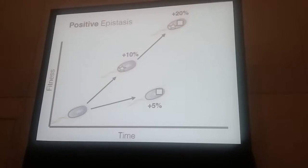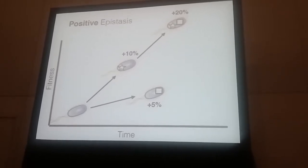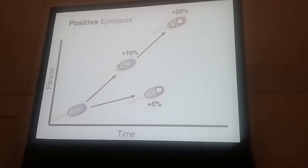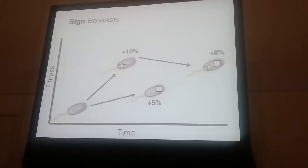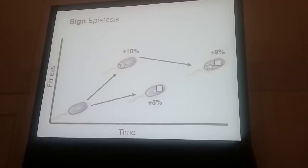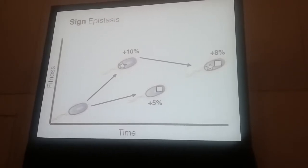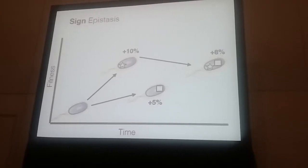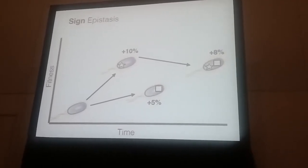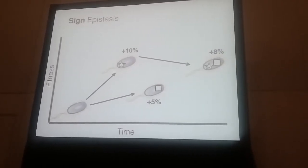The opposite of that could also be true, where we have a positive interaction — here an additional 5% on top. And of course, the extreme of either of those scenarios would be sign epistasis. So in this case I showed the extreme negative, where this originally beneficial allele, when it arises in the presence of this star mutation, is now costly.